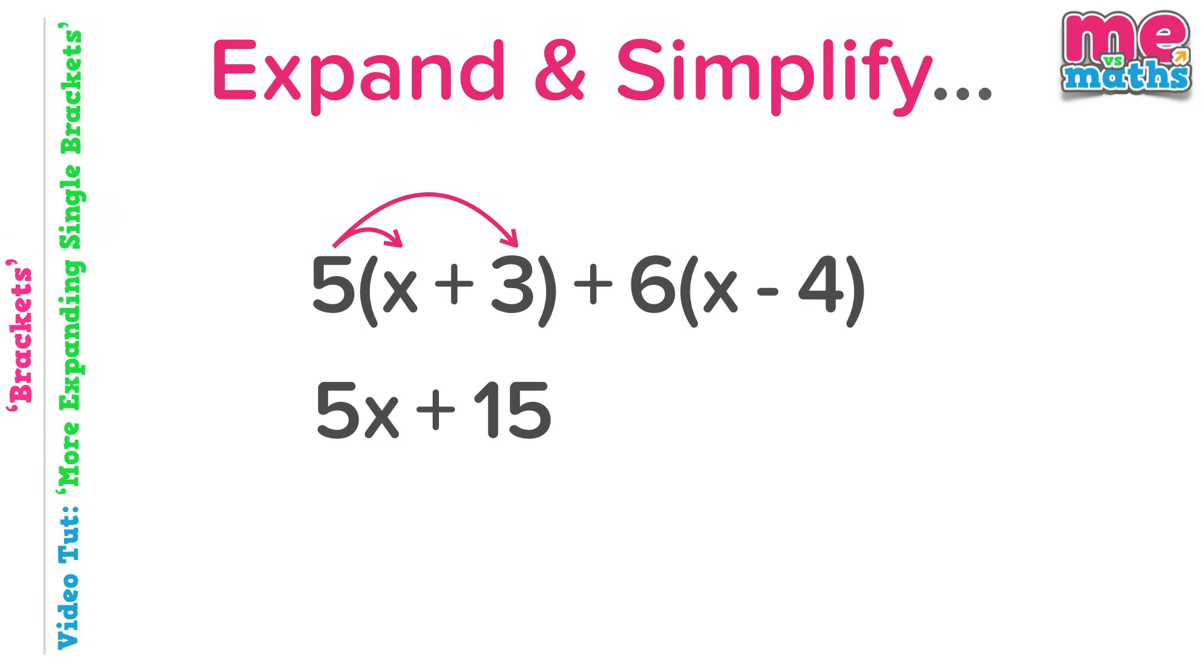Our second bracket then. Six times x is 6x which is positive, so plus 6x. And finally positive six times negative four is minus twenty-four. So we've expanded our brackets and now we have an expression that we can simplify.